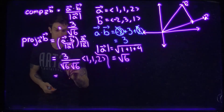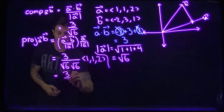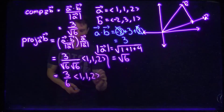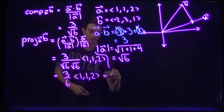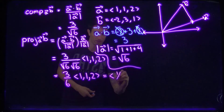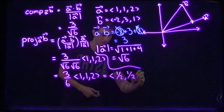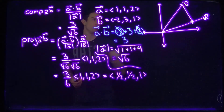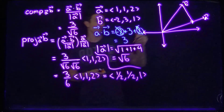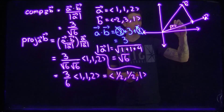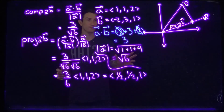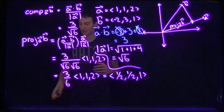This gives us the vector (1/2, 1/2, 1). And that's it — this vector (1/2, 1/2, 1) is the projection of b onto a. So a quick example complete. I do have one more example coming up — we're going to take this same idea and apply it to work, a work application.